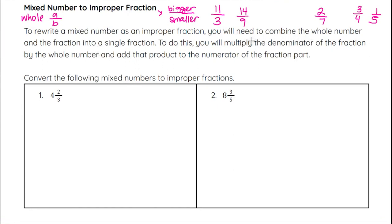To do this, you multiply the denominator of the fraction by the whole number and add that product to the numerator of the fraction part.